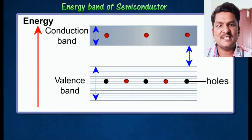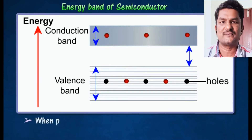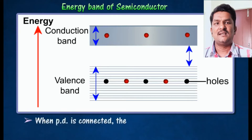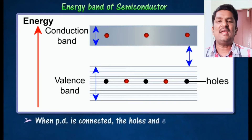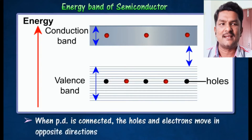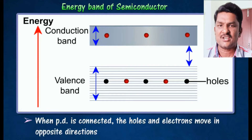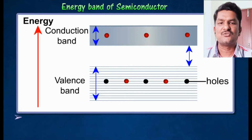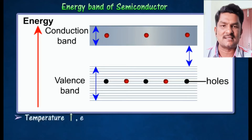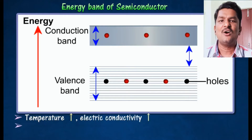The deficiency of an electron in the valence band is called a hole. Holes have no physical significance. When a potential difference is applied across the semiconductor, the holes and electrons move in opposite directions, so in semiconductors, conduction is due to both electrons and holes.